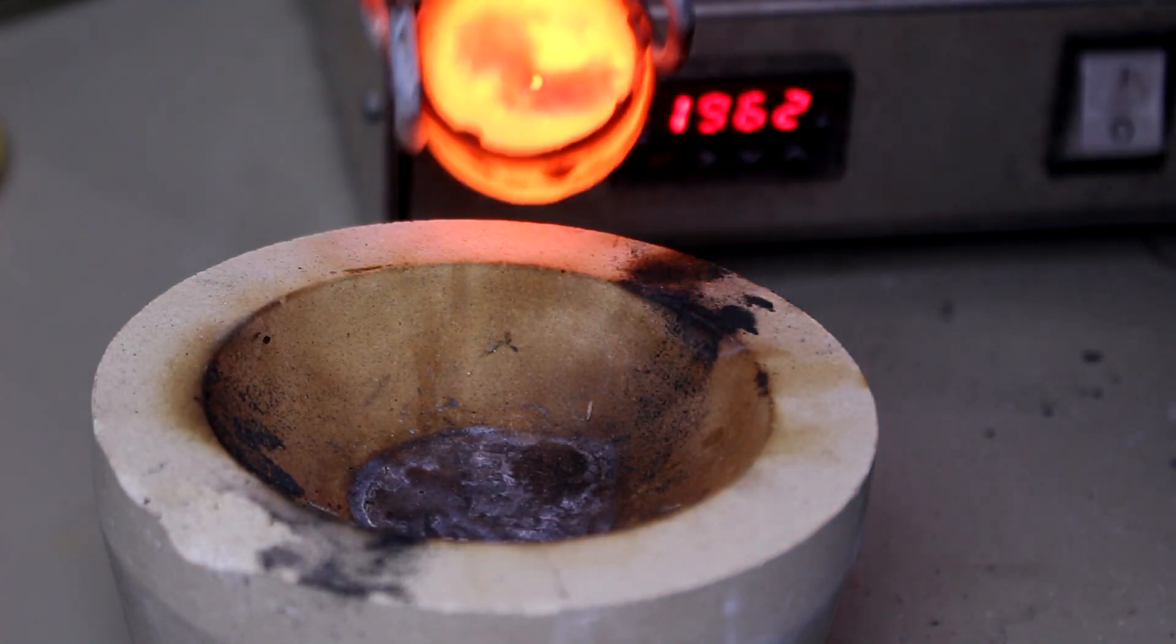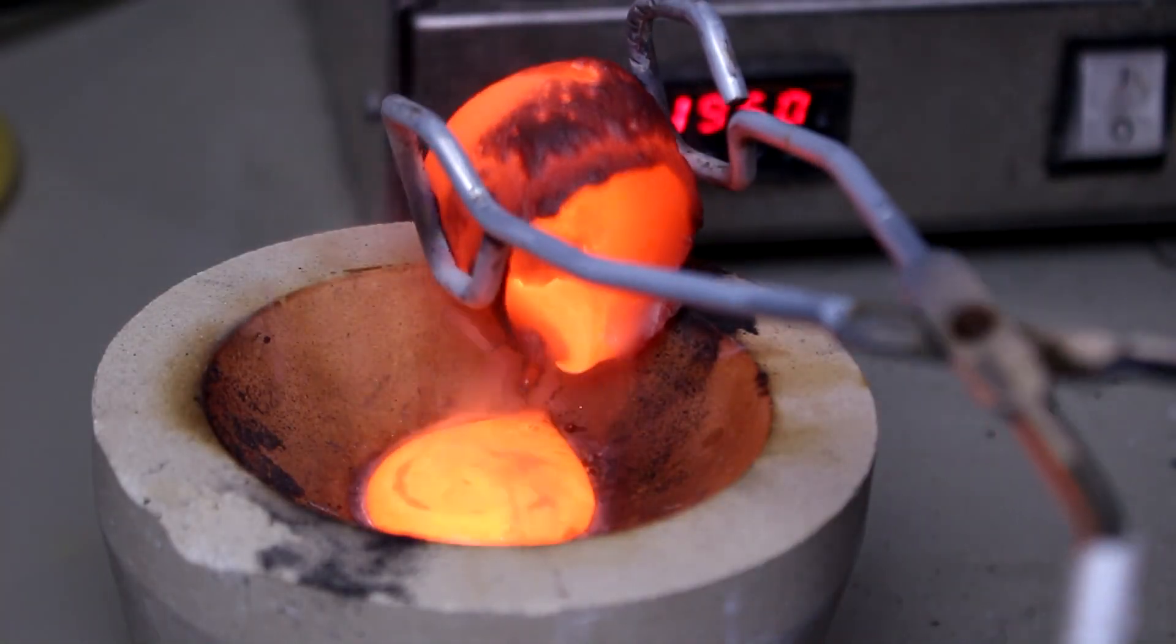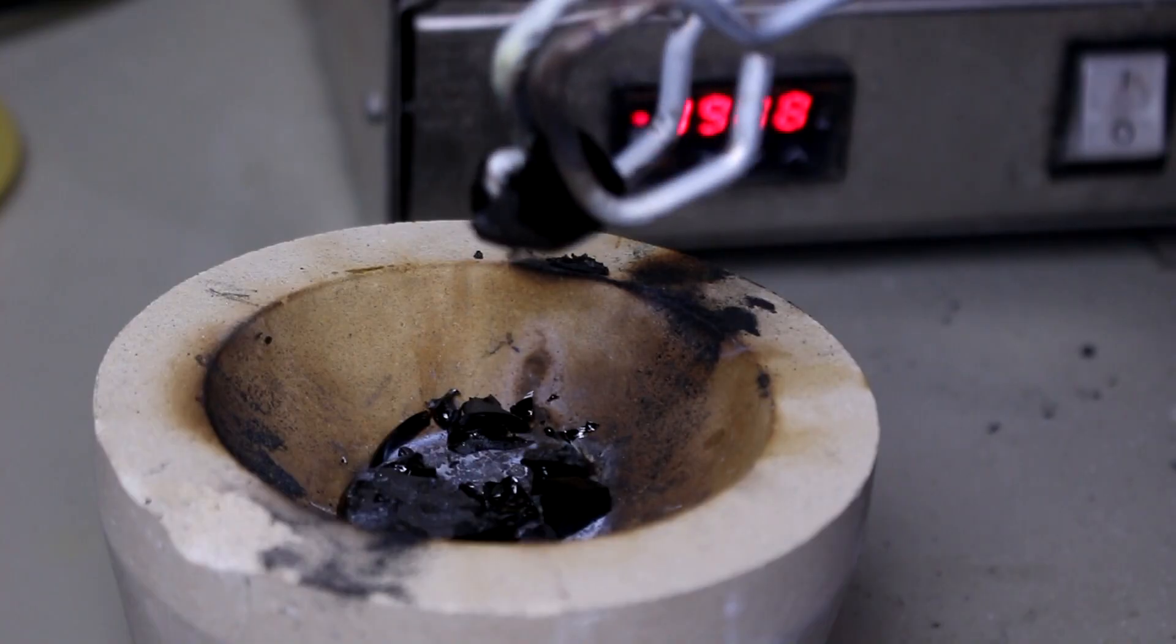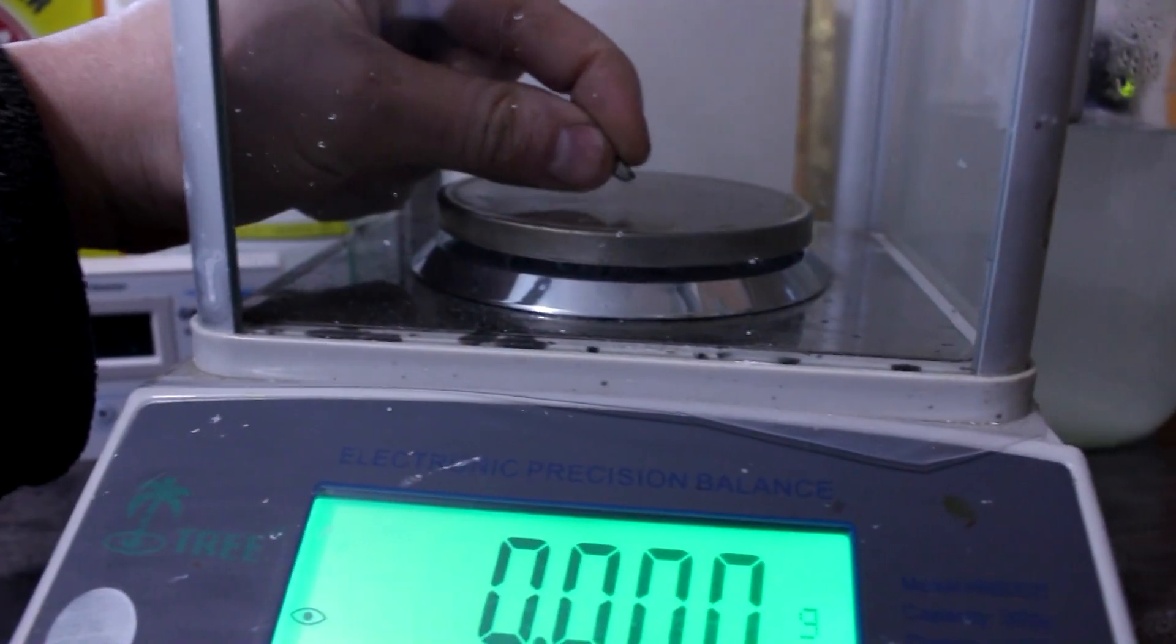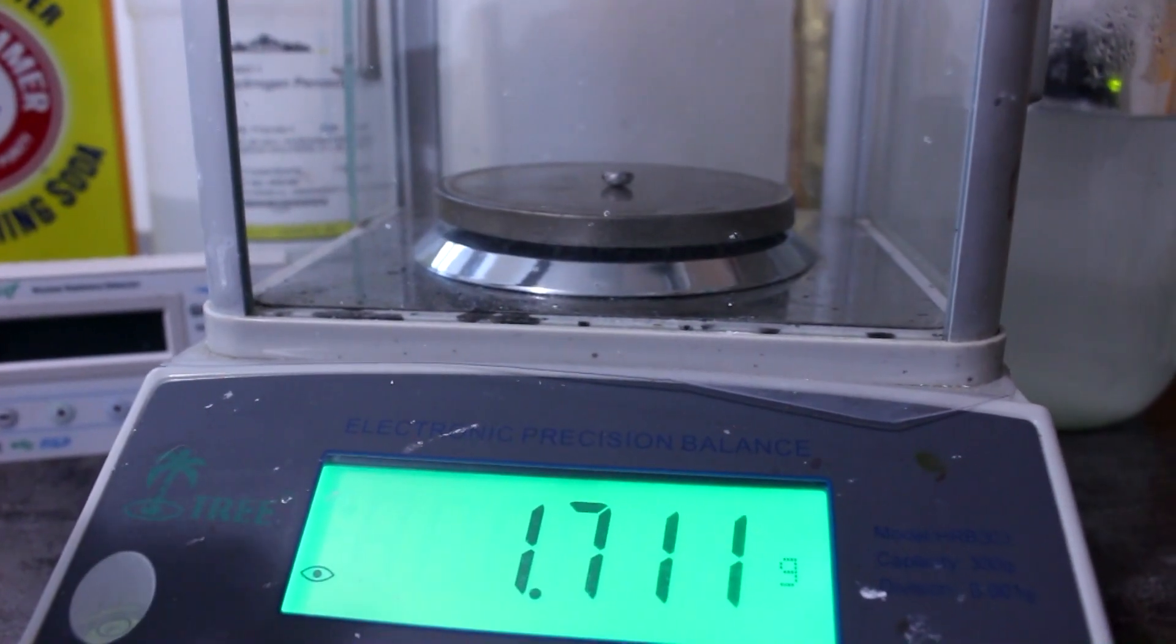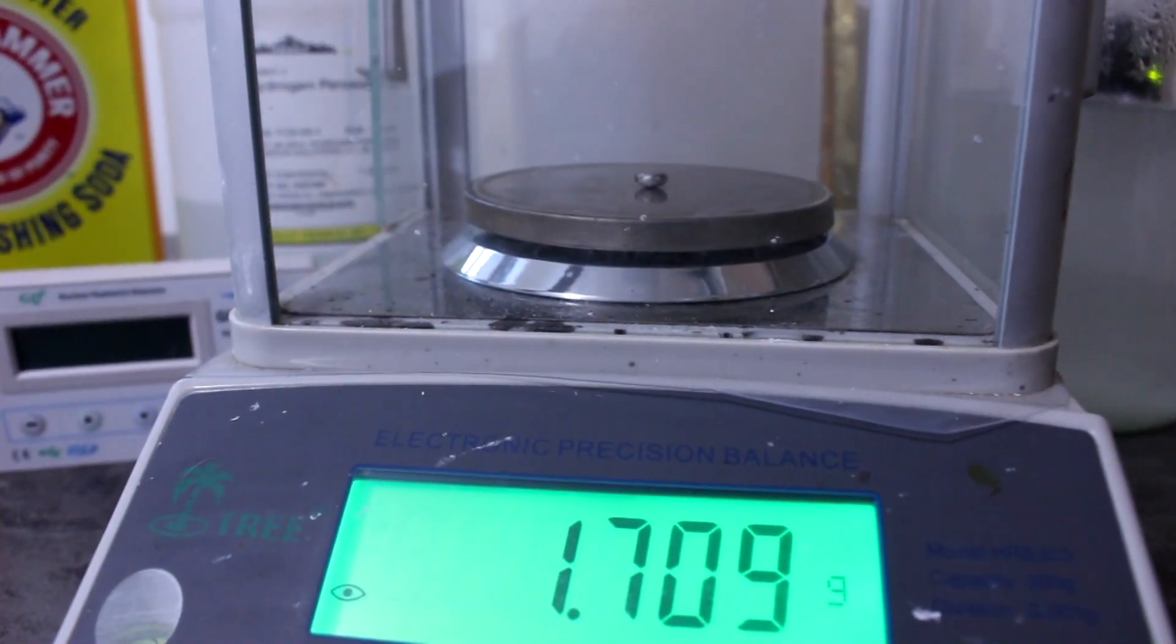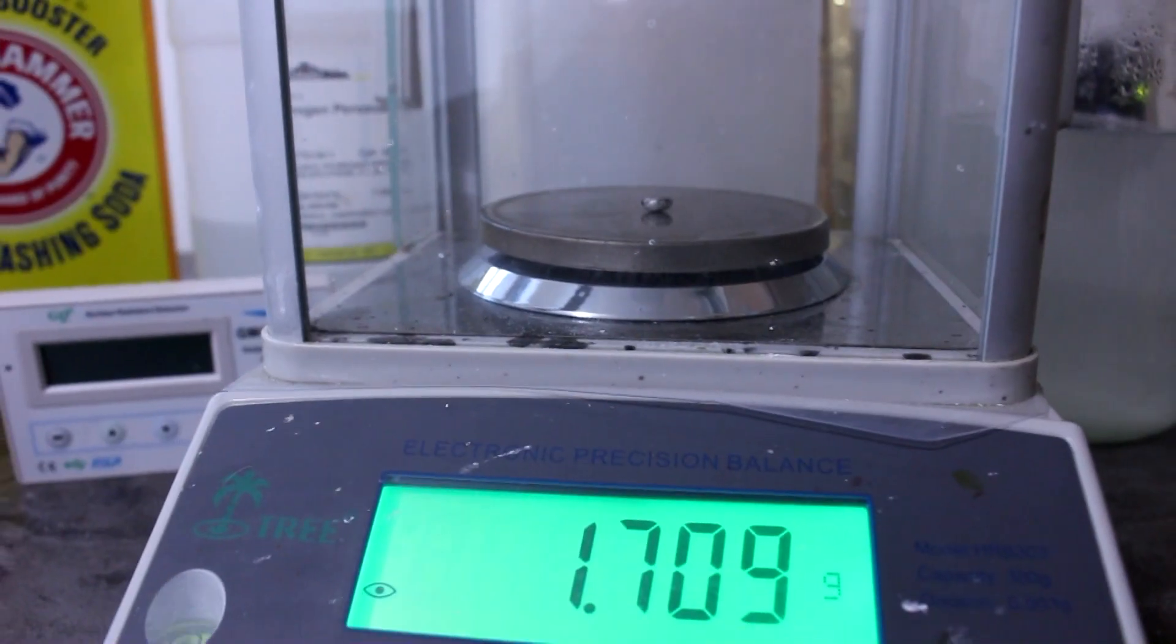There's our silver. Hopefully. Let's pour it out. Oh, I saw some metal there. There's a chunk of silver right there. Nice. Here's the silver. 1.7 grams. It really wasn't even worth trying to recover, but you guys probably learned some chemistry. So that's always good.